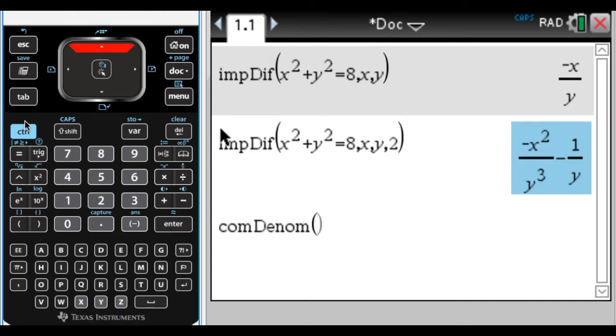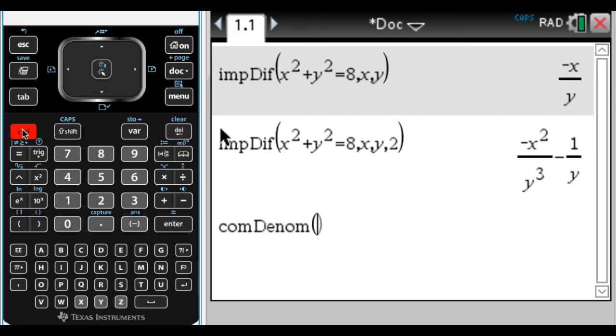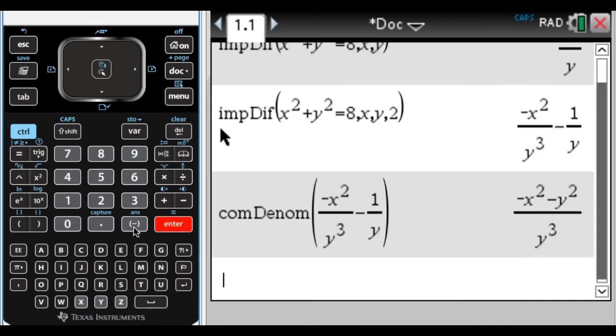There's a lot of ways to get that. You can put a box around it and paste it down. That'll work. You can do control and then the negative sign for the previous answer, which is probably the fastest way if you're using the handheld.